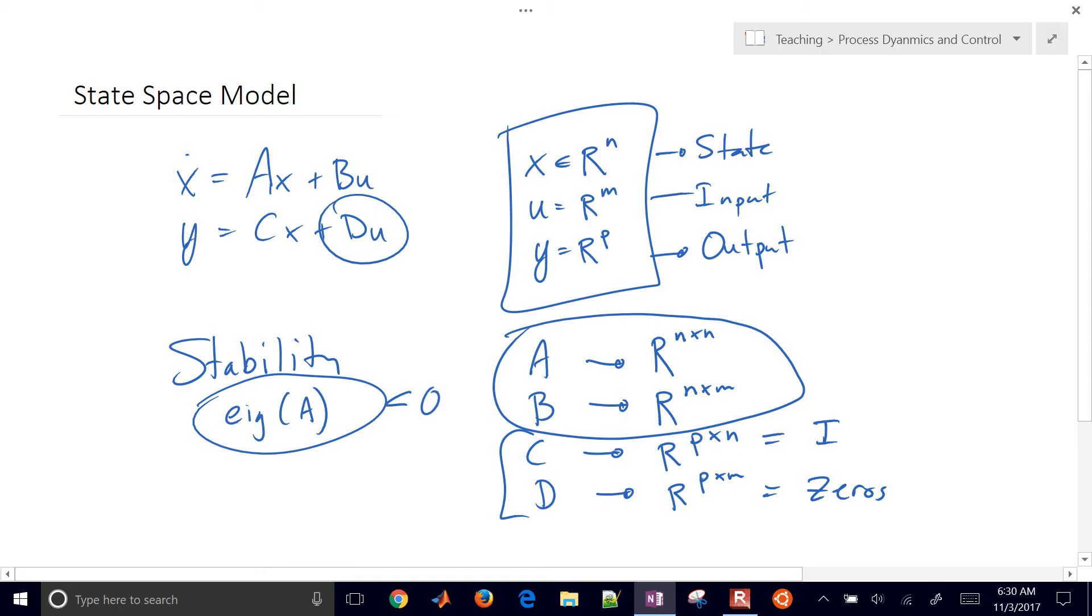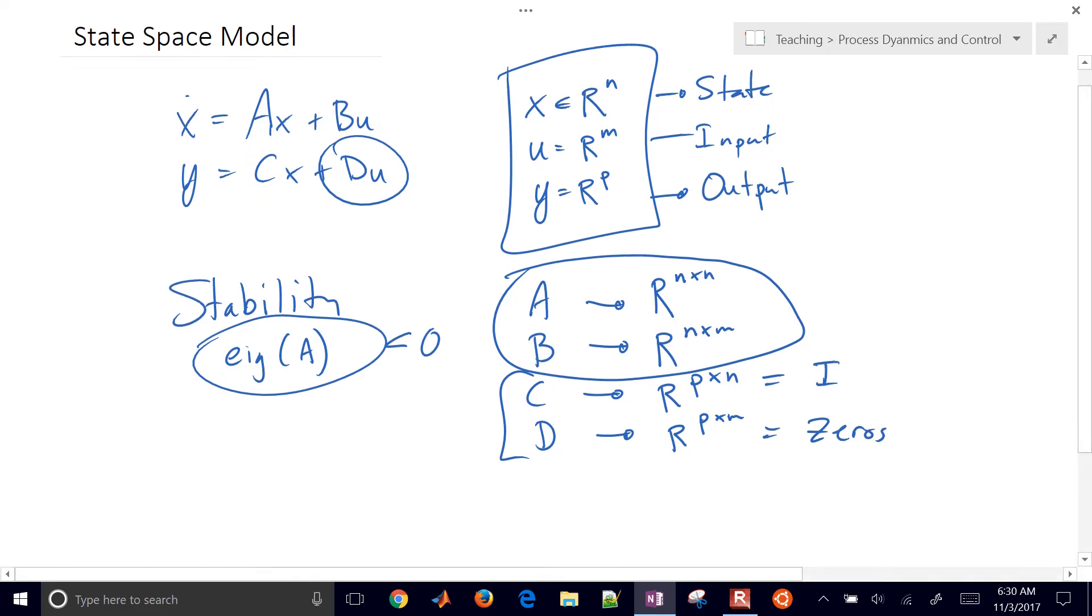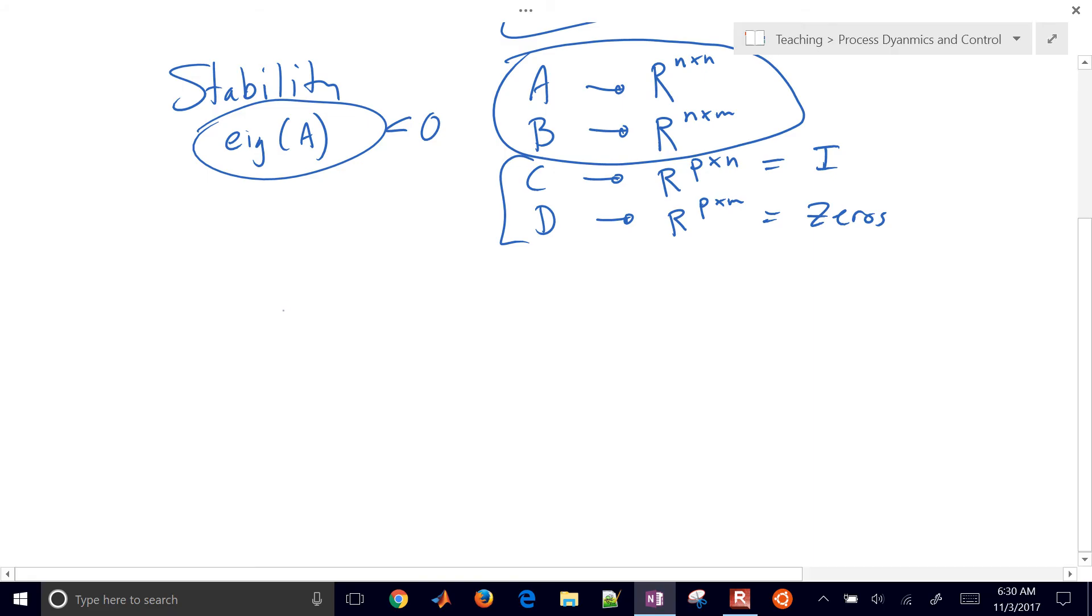But if any of them are greater than zero or equal to zero, then if it's equal to zero it's an integrating system, and if it's greater than zero then it'll be unstable. Let's do an example. A simple example with just a first order system. So let's say we have a differential equation that looks like this. This is a common description of many dynamic systems with a gain and a time constant.